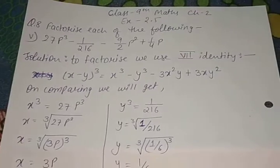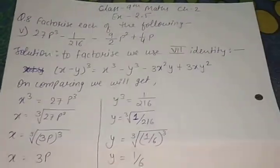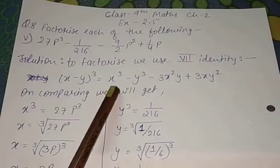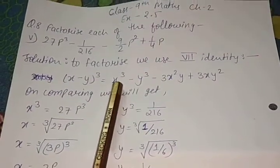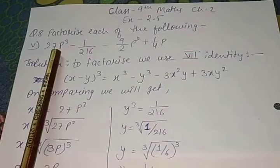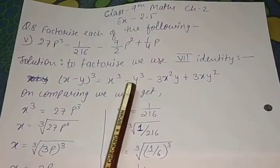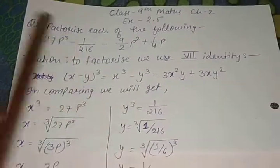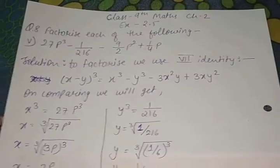Again, since we have identity, we start comparing so that we can put the value in variables. So we can put the value in our identity. First term is x³, second term is y³. Then we get the value of x and y and then we put in the identity.